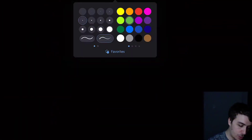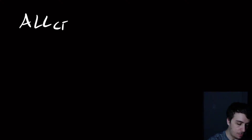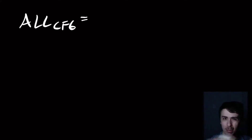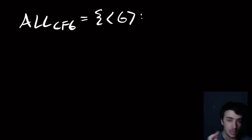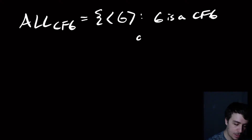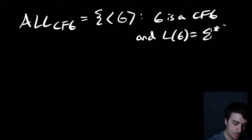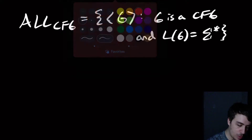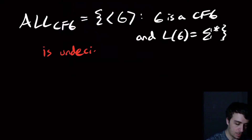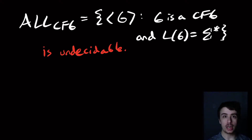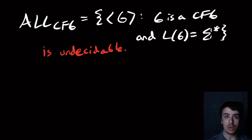I want to talk about the universality problem for CFGs — you can talk about PDAs too, but it doesn't actually matter here. The input is a single CFG G, and the question is whether the language of G is everything, i.e., Σ*. We will be showing today that this is undecidable, which is kind of shocking in that the emptiness problem is decidable but the universality problem is undecidable.